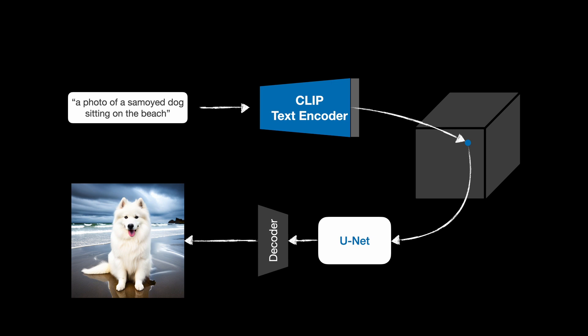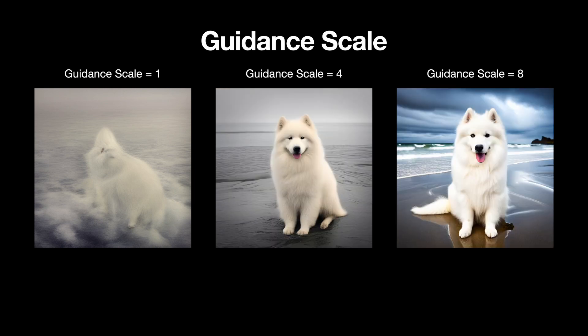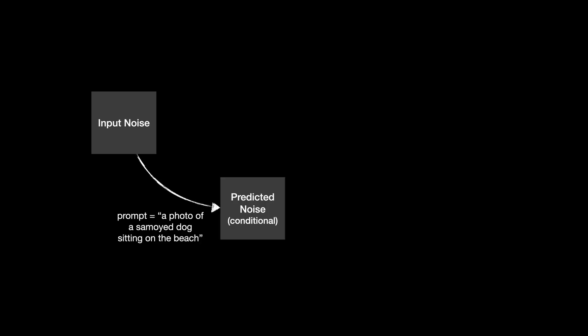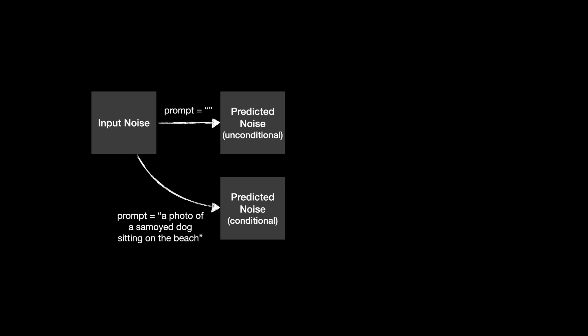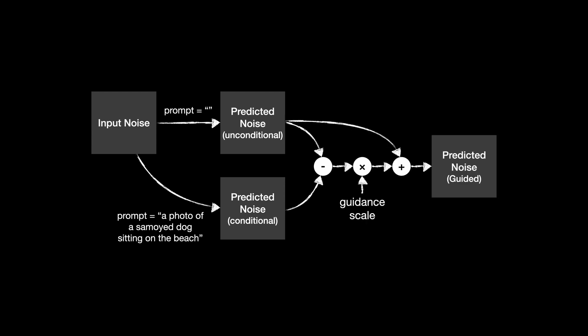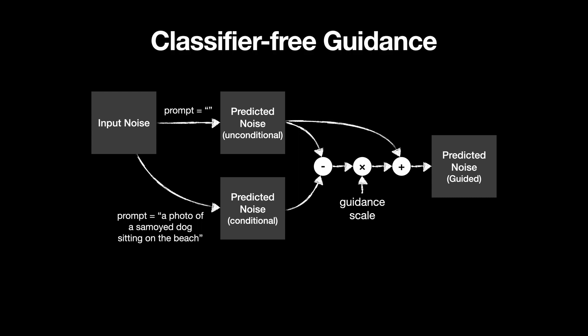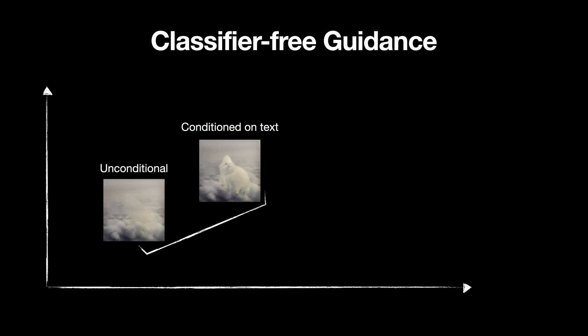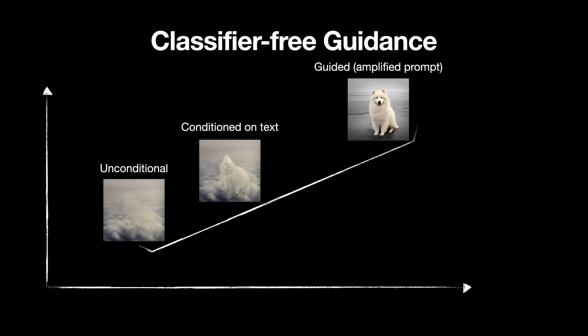If you've tried stable diffusion before, you may have noticed a parameter named GuidanceScale. The higher the scale, the stronger the effect the prompt has on the generation, while a lower scale results in a more subtle influence. Under the hood, this is how it works: given a random noise vector as input, we run the diffusion process twice — once conditioned on a prompt and the other run unconditionally. At every step, we get the noise prediction for those two, take the difference, multiply it with the guidance scale, and add it back to the original prediction. This method is called classifier-free guidance, and it essentially amplifies the effect of the prompt on the results by moving further in the direction of the prompt.